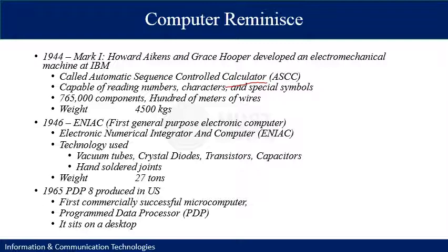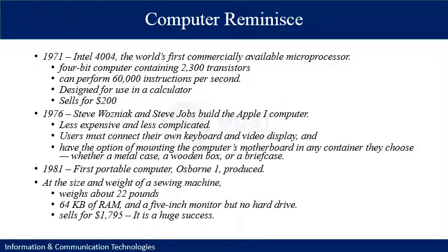After a few years, scientists were able to develop a personal computer. The first attempt was in 1965, when a program data processor was developed — the first commercially successful microcomputer, because it sat on a desktop and was available for a wide variety of customers. In 1971, Intel deployed the first commercially available microprocessor: a 4-bit computer containing 2,300 transistors with an average speed of 60,000 instructions per second, designed for use in a calculator.